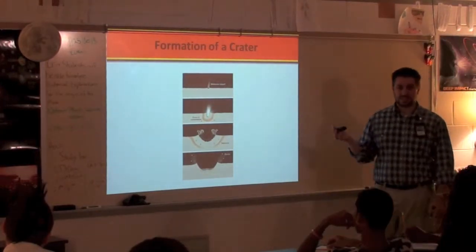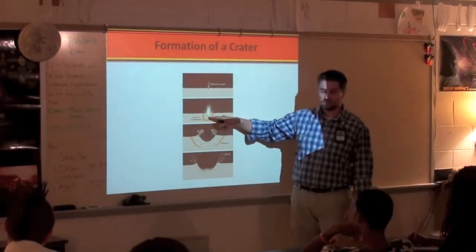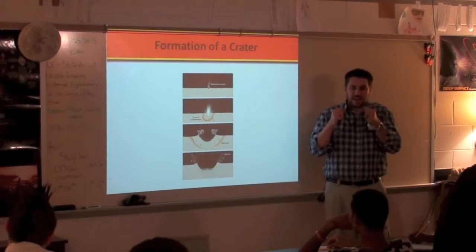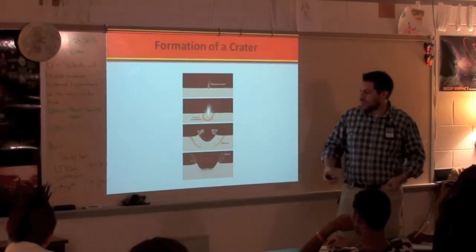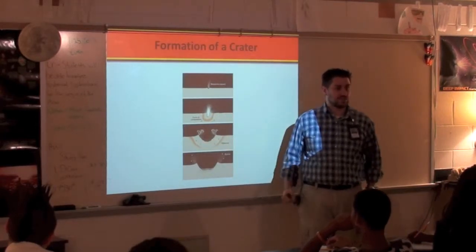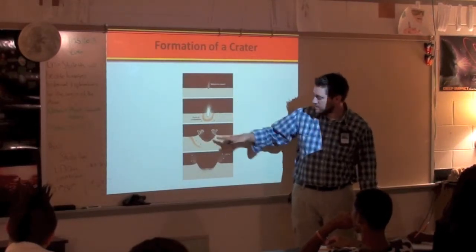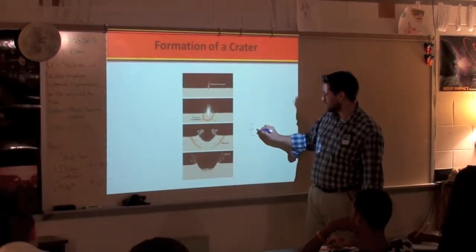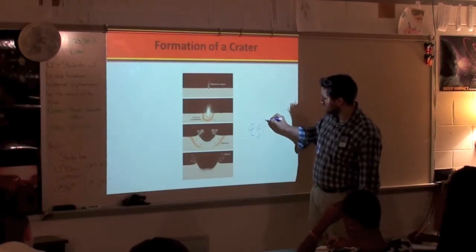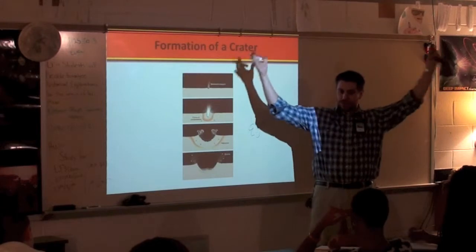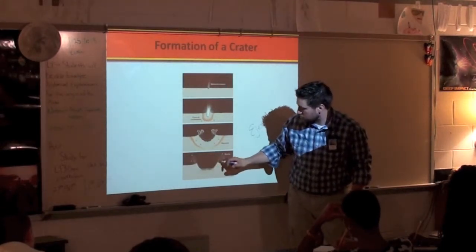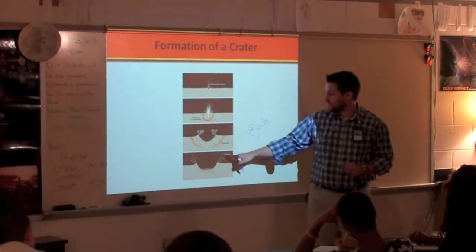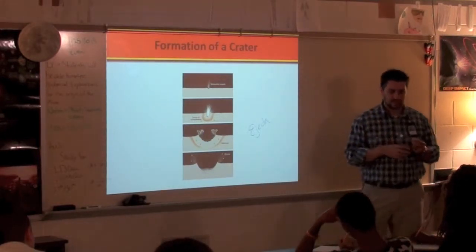Formation of a crater is pretty simple. Something hits, pushes down into the moon, compresses things, and like hitting a giant trampoline, that material doesn't like to be compressed — it pushes back and lifts material out. This is called ejecta, and there's also rebound. That ejecta pushes back out, forming a nice circular crater — a divot in the moon or earth — and this forms rays.